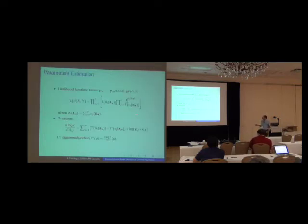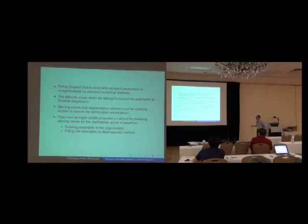The likelihood is indeed a product of Dirichlet where the novelty is the function driving the Dirichlet distribution. The gradients are easily computed and necessary for the optimization step. Well fitting Dirichlet distribution is straightforward for constant parameters. But the difficulty arises when we attempt to extend the estimation to Dirichlet regression. In other words when we try to put the covariates in the model sometimes you may have some difficulties.